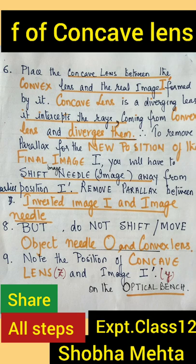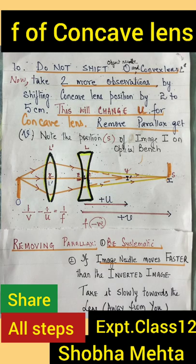Remove parallax again. This final image is I. Now, positions X, Y, Z, and S are the positions of the convex lens, image I dash, concave lens, and final image respectively.